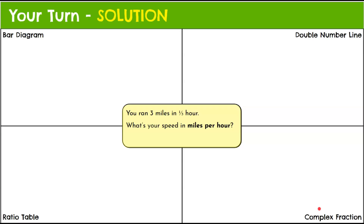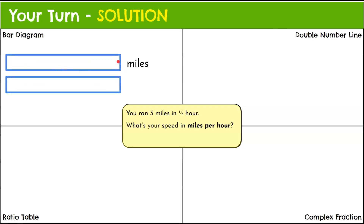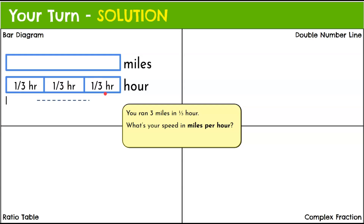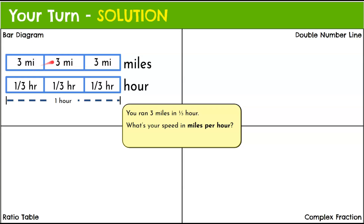Welcome back — here's the solution. Starting with the bar diagram: double bars for miles and hour. We make the bottom bar equal one, and since we have one-third of an hour, we divide it into three sections — one-third, two-thirds, three-thirds makes a whole hour. Now we divide the top bar into three equal sections. We know that for each one-third of an hour we ran three miles, so three miles, three miles, three miles. Adding them: three, six, nine miles total, giving a unit rate of nine miles per hour.